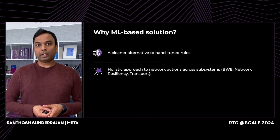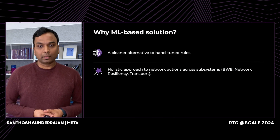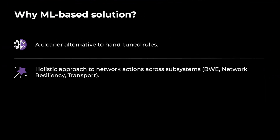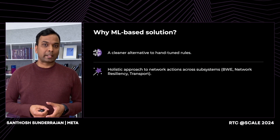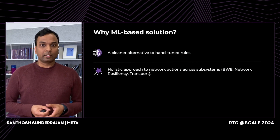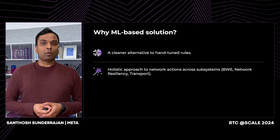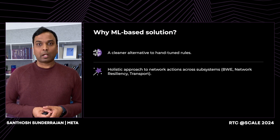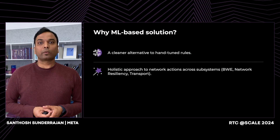Therefore, we wanted to formulate a solution based on ML. ML gave us a cleaner alternative. The one point to note is we need sufficient post-validation so that the ML model doesn't give unreasonable results. ML models also gave us a holistic approach to take network actions across multiple subsystems such as bandwidth estimator, network resiliency, and transport. This gives us a good overall strategy for tackling different network conditions and what kind of cross-stack optimization we want to do.